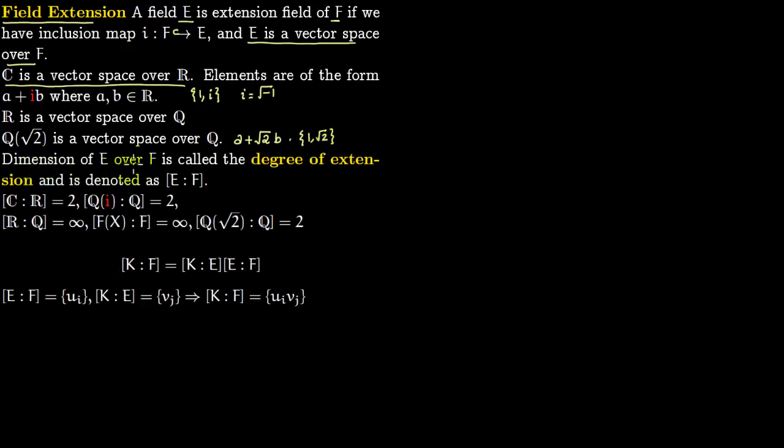Dimension of E over F, this base field F, is called the degree of extension and we write it as [E:F]. [C:R] = 2, the basis is {1, i}. [Q(i):Q] = 2, here the basis is {1, i} again. [R:Q] is infinite because Q is countable and R is uncountable.